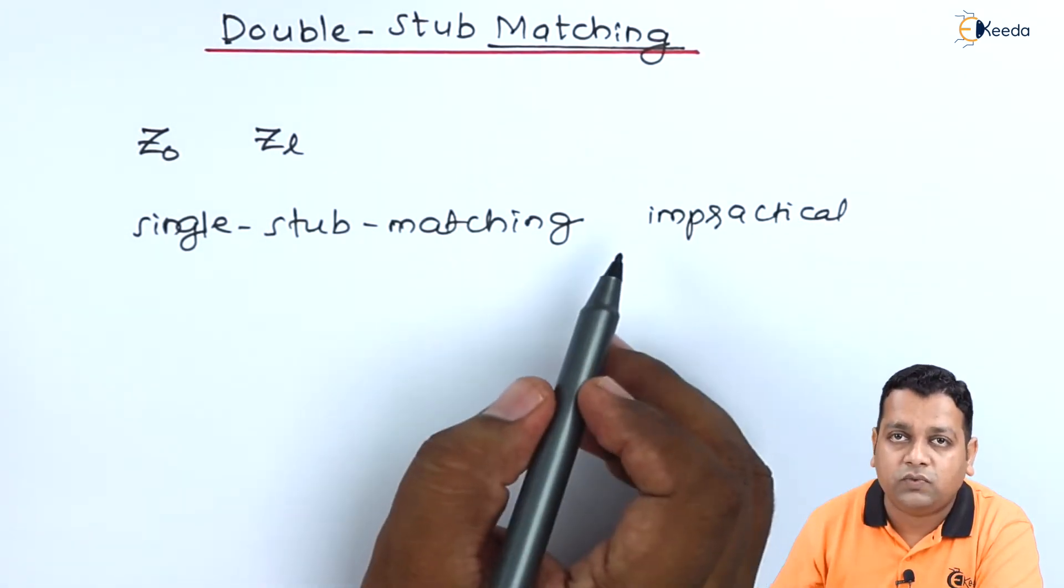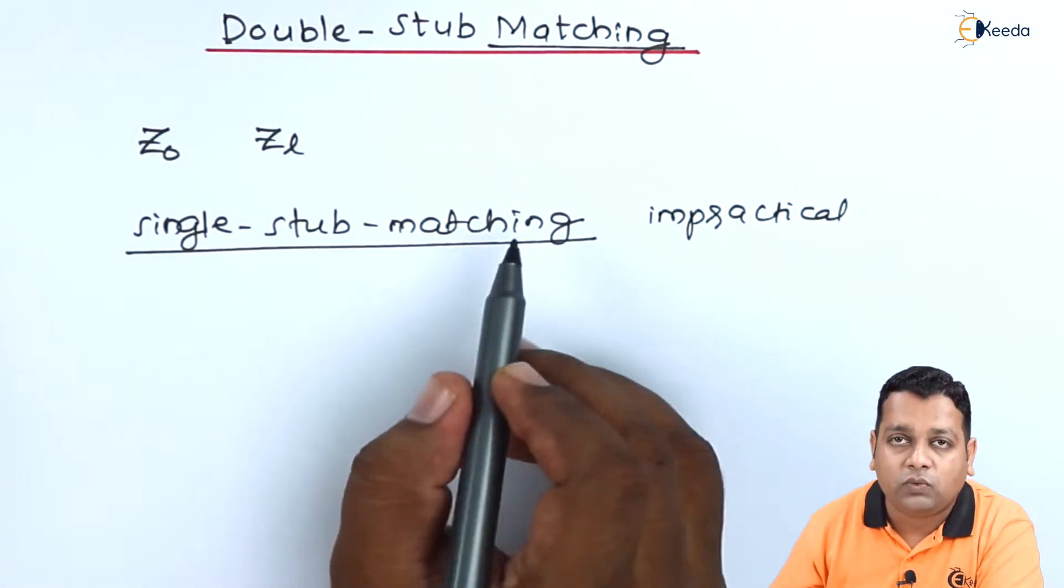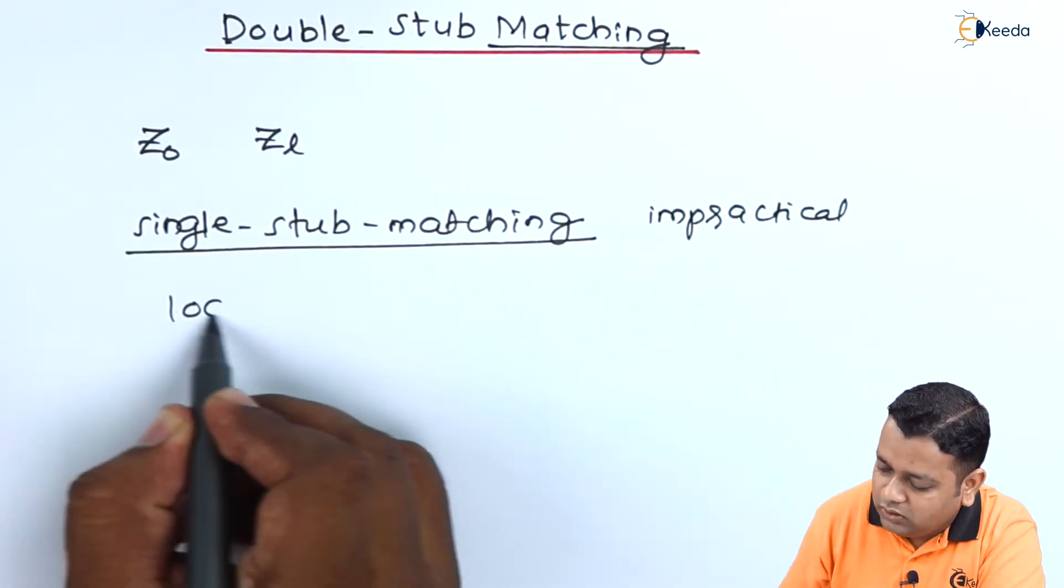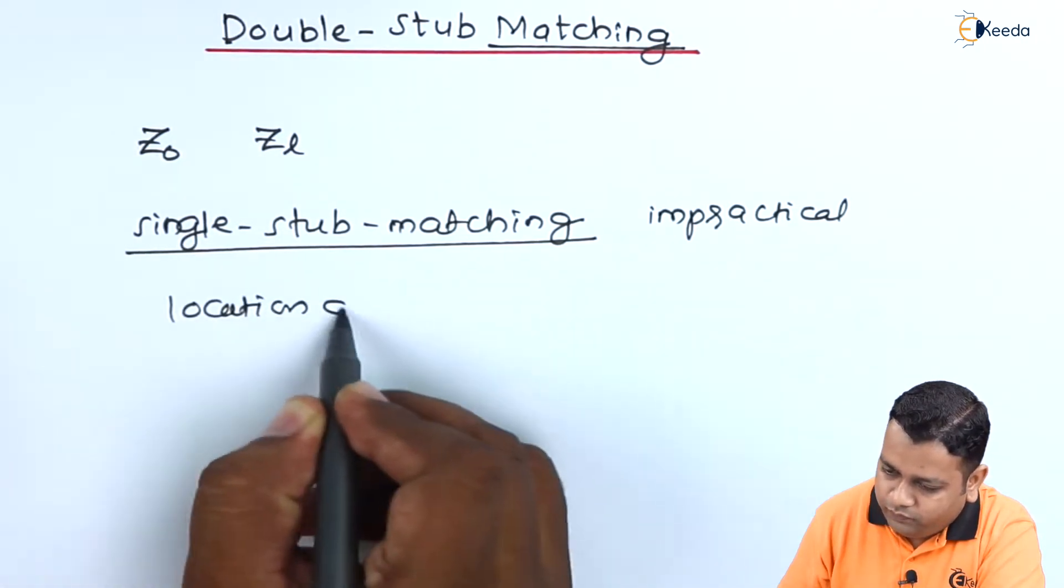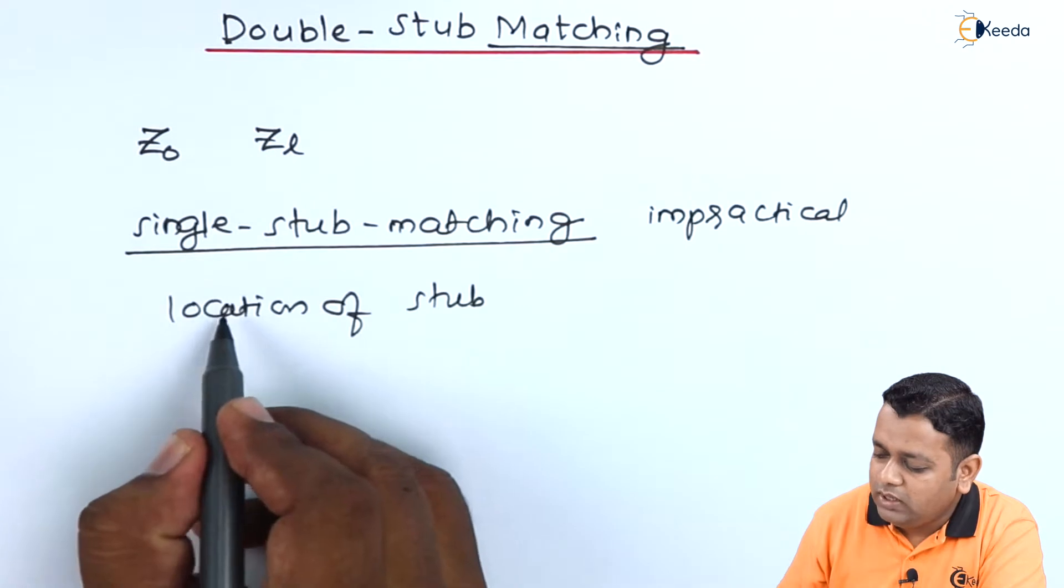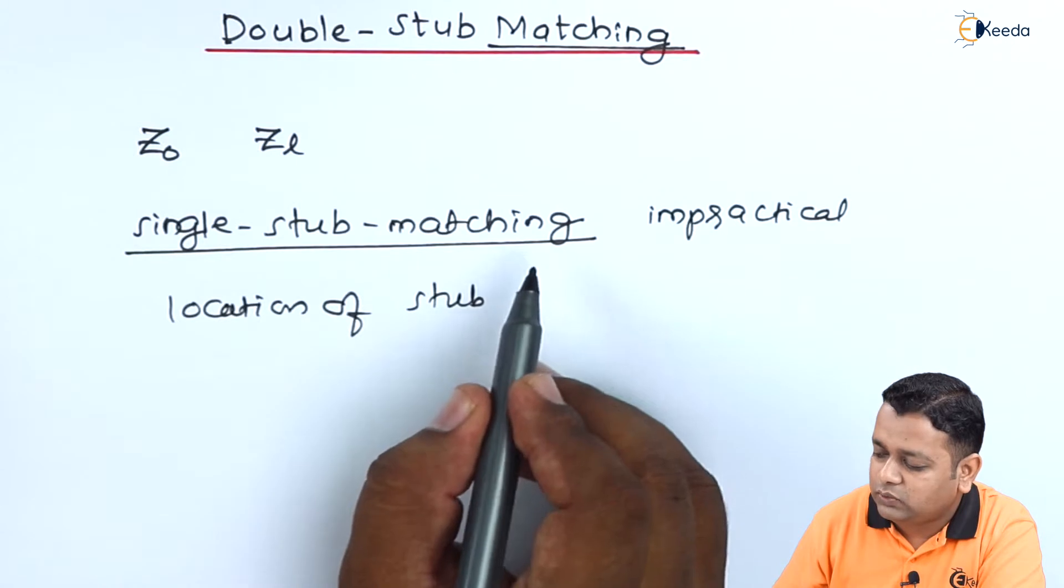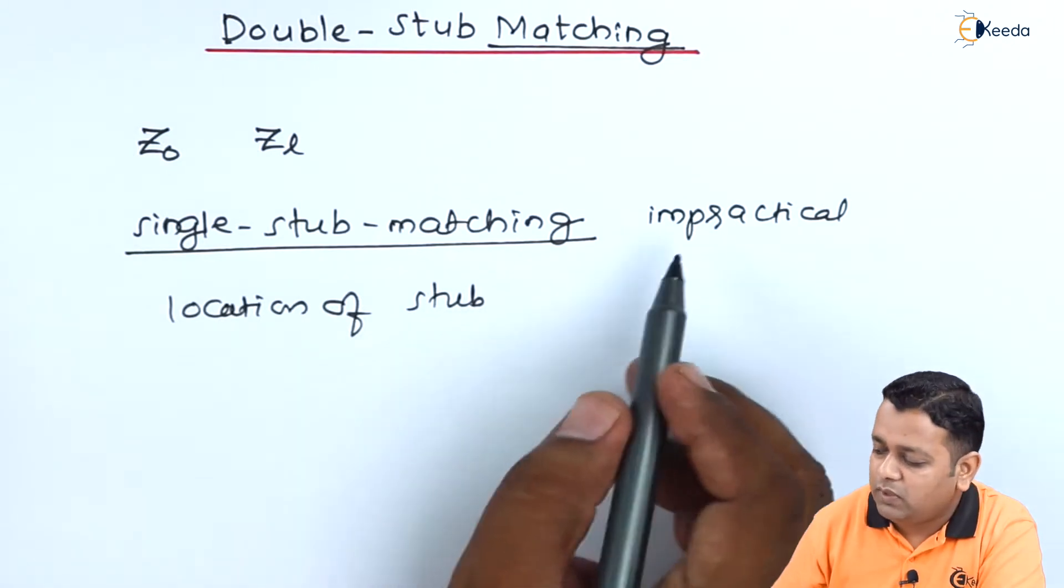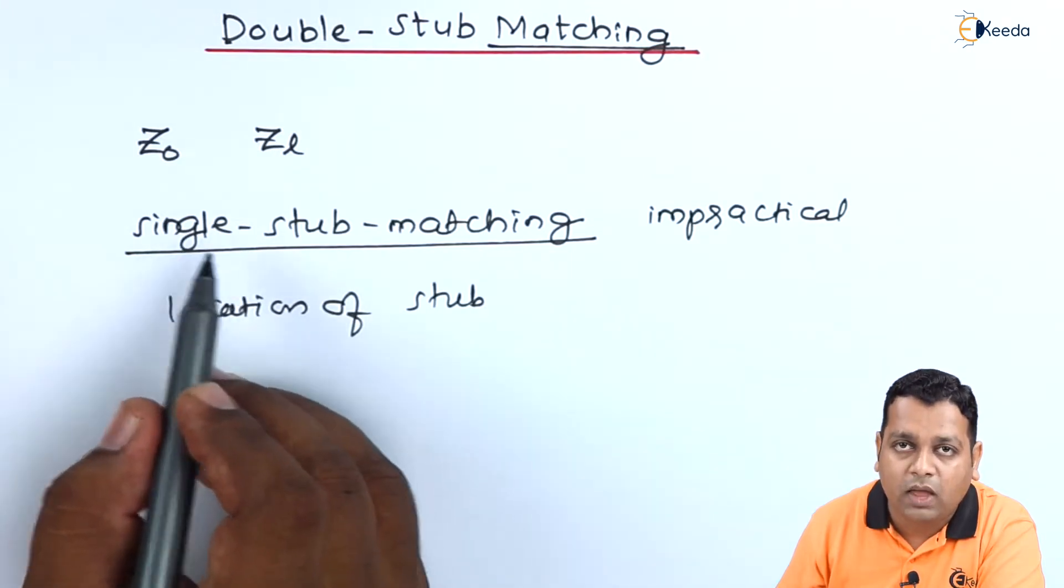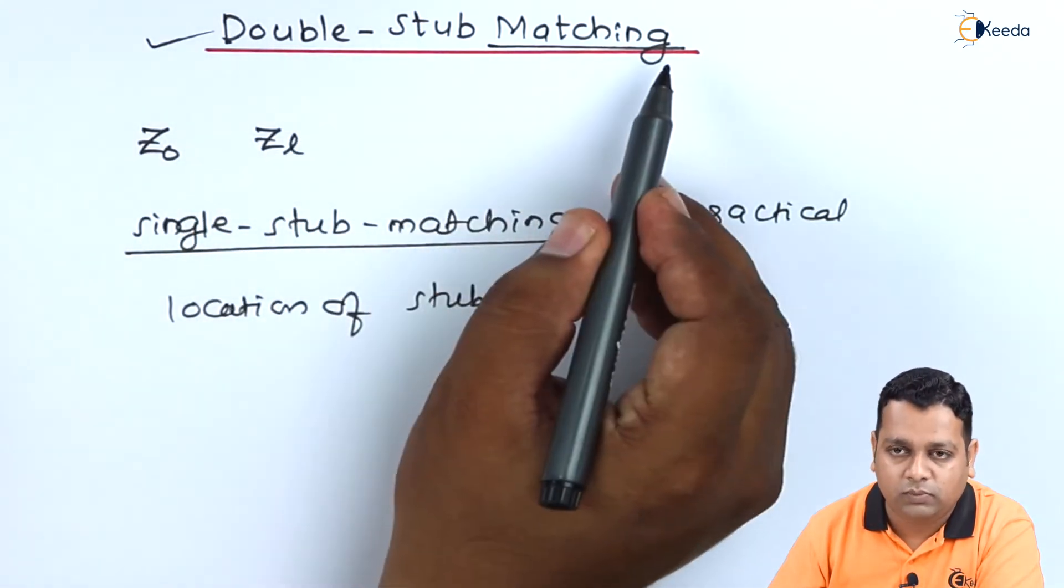Just now in the previous video we have solved a simple problem with the help of single-stub matching. It was quite tedious to find out the exact location of the stub into the Smith chart. Determining the exact physical location of the stub with single-stub matching is quite tedious, hence the method is impractical and we get the requirement of one more stub added to it.